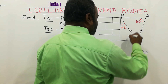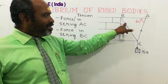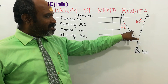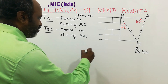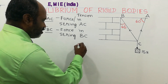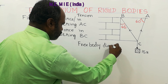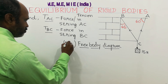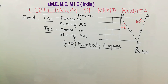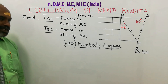The string should have the ability to hold the weight — called 15 Newton. That is called force in string AC and force in string BC. By applying Lami's theorem, as per the geometry, we are going to consider the free body diagram — shortly called FBD. FBD stands for free body diagram. Then we are going to apply Lami's theorem to find the tension in the string AC and BC.